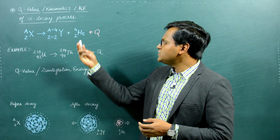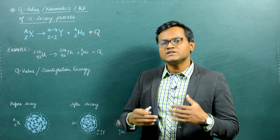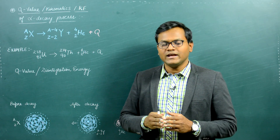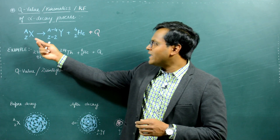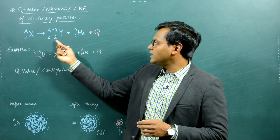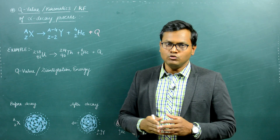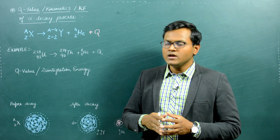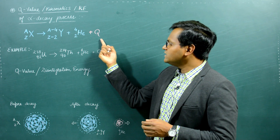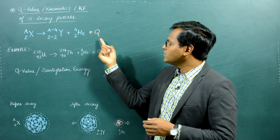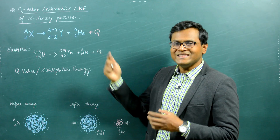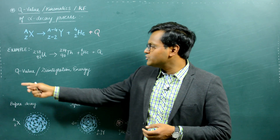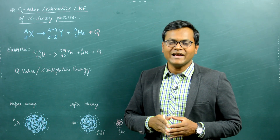In the alpha decay process, there is a spontaneous emission of an alpha particle. An alpha particle has a mass number of 4 and atomic number of 2. When the parent nuclei undergoes alpha decay, it usually loses 4 of its nucleons. This process is accompanied by a release of energy, written as Q, known as the disintegration energy or Q value of the reaction.